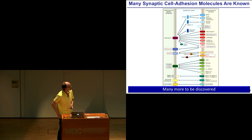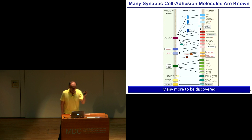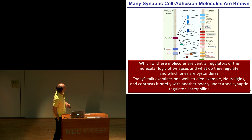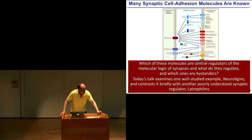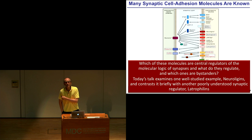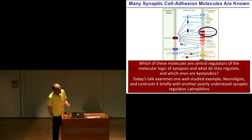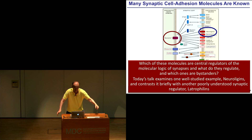Many candidate cell adhesion molecules have been described. On the left side are presynaptic cell adhesion molecules, on the right side are postsynaptic ones. There are hub molecules such as neurexins, as shown here, or LAR-type PTPRs, with a large number of postsynaptic molecules that these presynaptic molecules interact with. Although all of these proteins have been described, sometimes even in great detail, for most of them we don't understand what they do. What we really need to know is what they exactly do, which ones are important, what they regulate, what they mediate, how they do it, and which ones are bystanders.